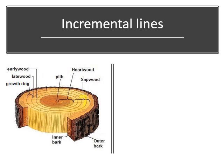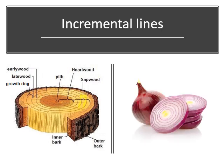Each line here shows the yearly or annual growth of the tree, and these are known as incremental lines. Similarly, onion rings also show incremental lines — they tell us how the onion was formed step by step, in increments, in a rhythm. So incremental lines show us the rhythmic pattern of growth, and we can calculate age through them.